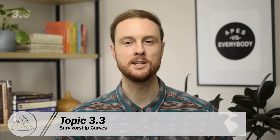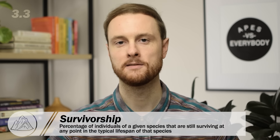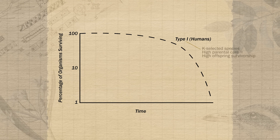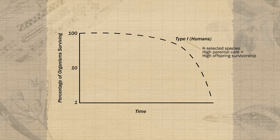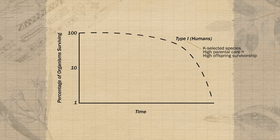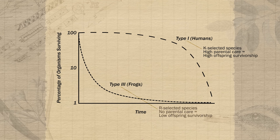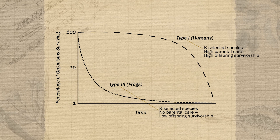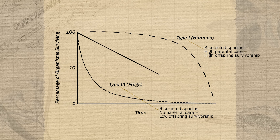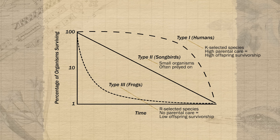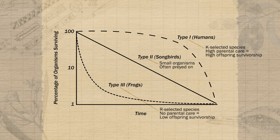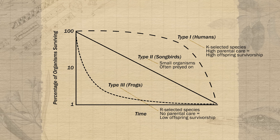Another concept related to reproduction is survivorship — the percentage of a given population still surviving at any point in their relative lifespan. There are three main survivorship curves. Type 1 survivorship is seen mostly in K-selected species like large mammals, where high parental care ensures almost all offspring survive to adulthood. Type 3 survivorship is the opposite: very few offspring survive infancy, typical of smaller R-strategist species that receive little parental care and are often prey. Type 2 survivorship falls in the middle, with a consistent mortality rate throughout the lifespan, seen in species like small rodents or birds that provide some parental care.